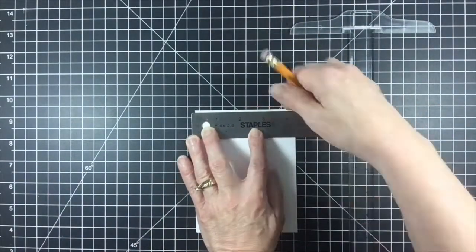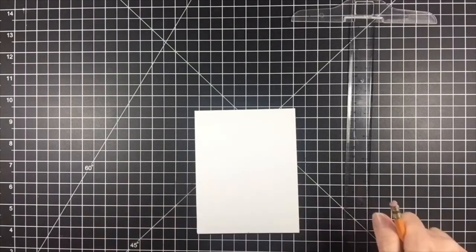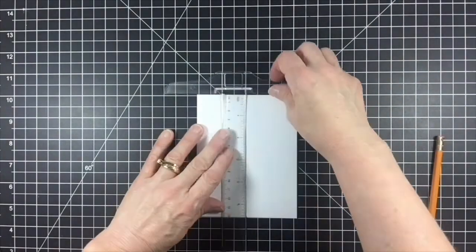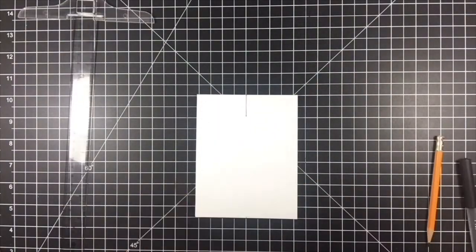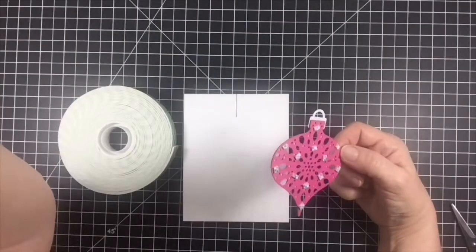I used a ruler and a t-square to make sure the string I drew for the ornament to hang from was centered precisely and exactly one inch down from the top of the card. A little bit of math makes all the difference in the finished card design.